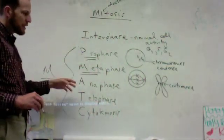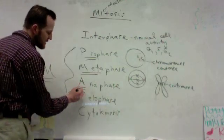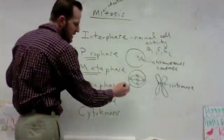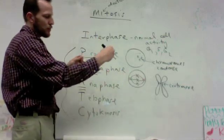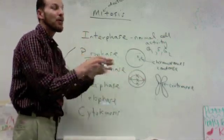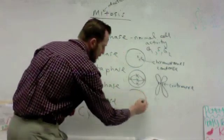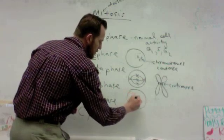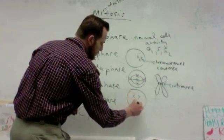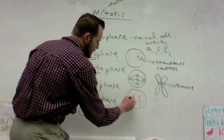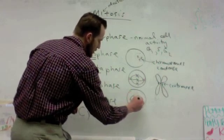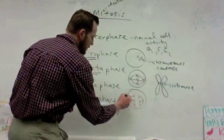In anaphase, I like to say that's the apart phase, because what happens is now the chromosomes are getting pulled apart. Now, the sister chromatids are getting pulled apart, and each one now is a full chromosome. Okay. So, I kind of draw that like this. Now, we wouldn't normally have an odd number of chromosomes, but... All right. That's all right.